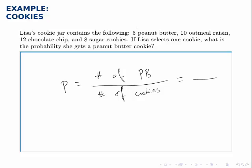If there are five peanut butter, ten oatmeal raisin, twelve chocolate chip, and eight sugar cookies, that's a total of thirty-five, if we add up those four numbers.